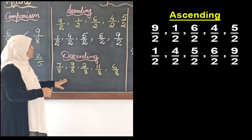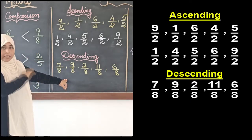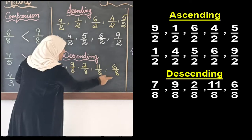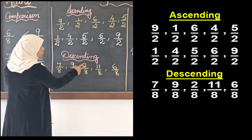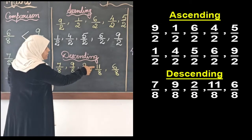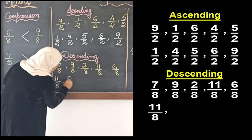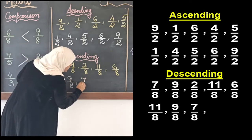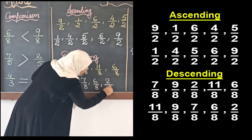Now we do the same for descending order. Descending order means big to small, so we start from the greatest fraction and move towards the smallest. Since the denominators are the same, we compare the numerators: 7, 9, 2, 11, and 6. The greatest numerator is 11, so 11/8 is the greatest fraction, then 9/8, then 7/8, then 6/8, and the smallest is 2/8.